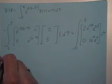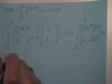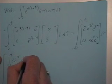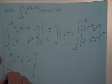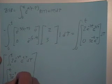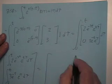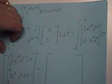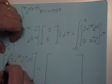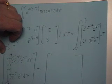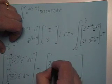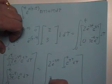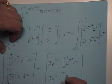Bringing the integral inside the matrix and integrating term by term: for the first entry, integral from zero to t of 2e^(-3t) times e^(3tau) d-tau; for the second entry, integral from zero to t of 3e^(-t) times e^(tau) d-tau. Since 2e^(-3t) and 3e^(-t) have no tau, they can be pulled outside their respective integrals as constant coefficients.